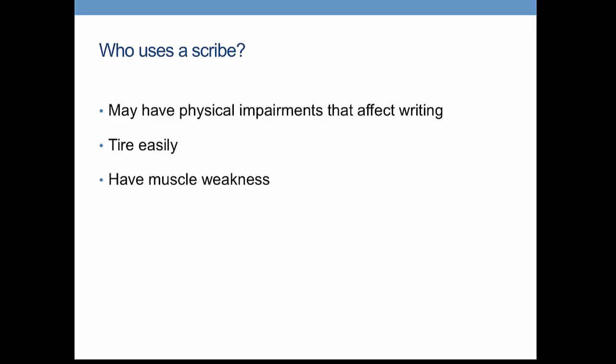So who uses a scribe? Scribes are only granted to candidates who cannot produce written communication by any other means. So they may have physical impairments that affect writing, tire easily, have muscle weakness, have limited dexterity or have severe dyslexia. And the definition of this is outlined in the DAWN guidelines referred to at the start.